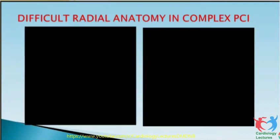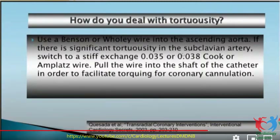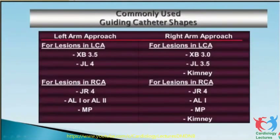For dealing with subclavian tortuosity, use a balloon or buddy wire into the ascending aorta. Switch to a stiff exchange wire — 0.035 or 0.038 Cook or Amplatz wire. Pull the wire into the shaft of the catheter to facilitate torquing for coronary cannulation. The workhorse guiding catheter for left coronary is EBU or JL, and for the right we use JR or Amplatz.